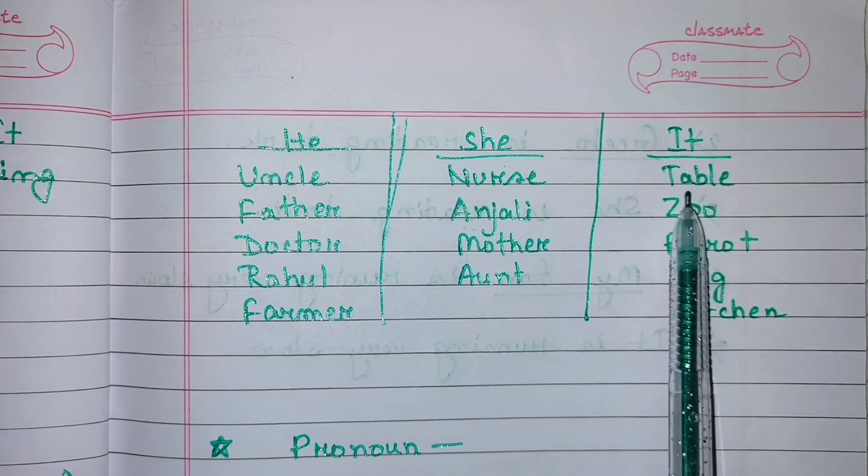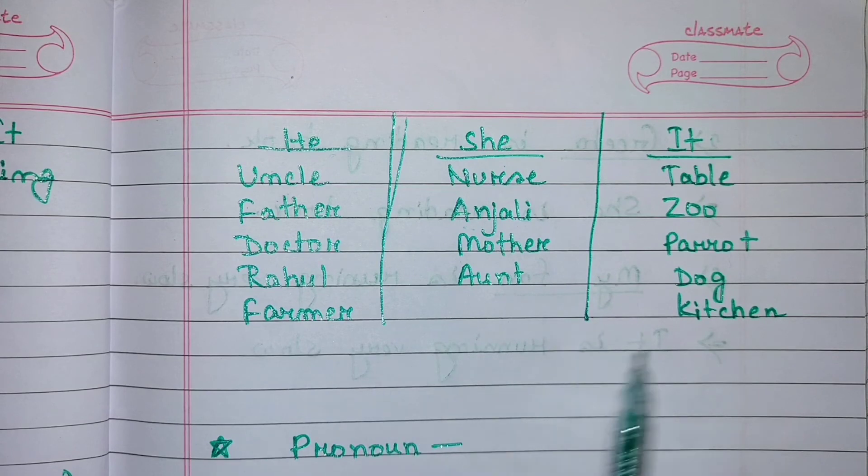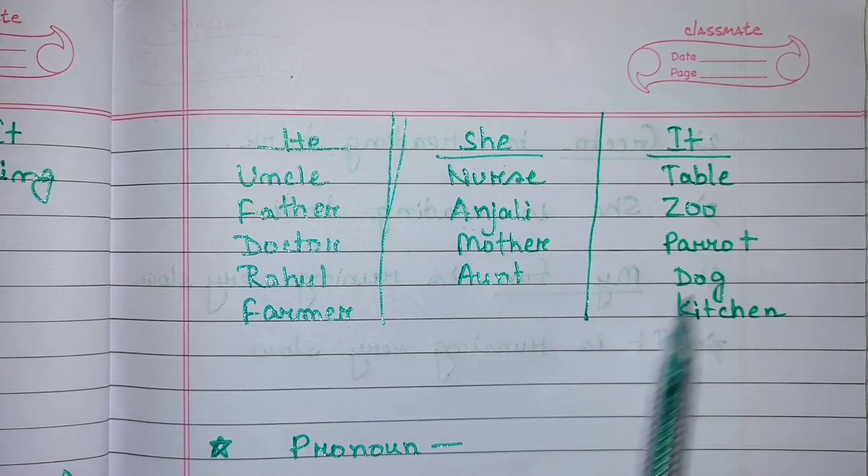So it pronoun - table, zoo, parrot, dog, kitchen, etc. - for these we use pronoun it.